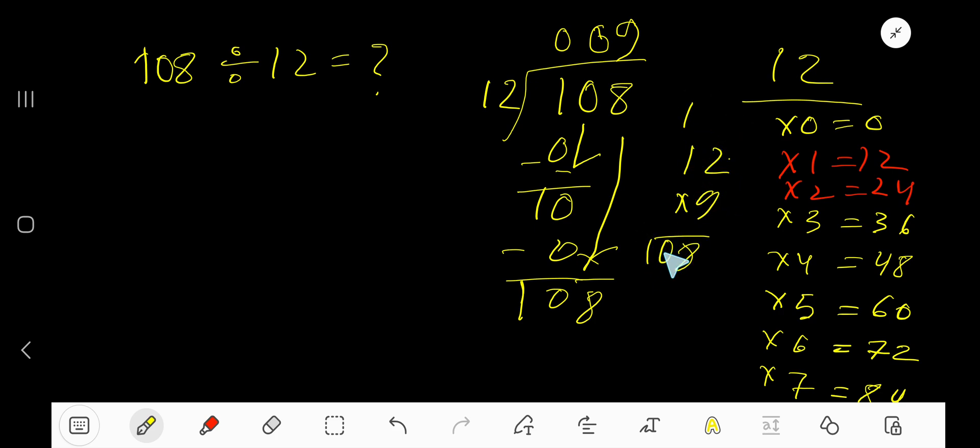Subtract, you're getting 0. So 0, 0, 9 means 9 is our answer or quotient.